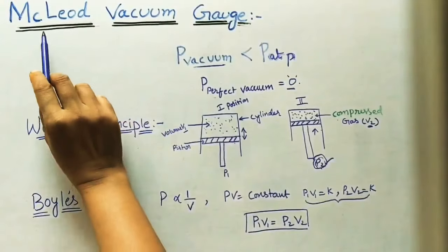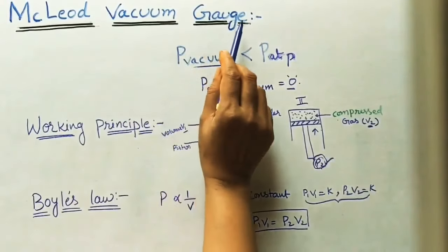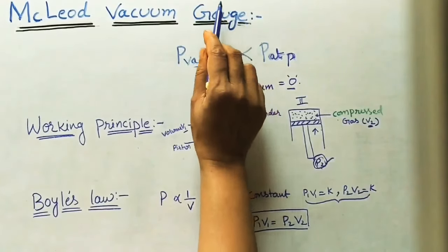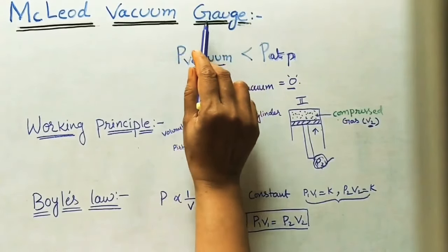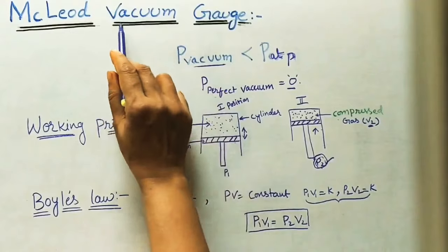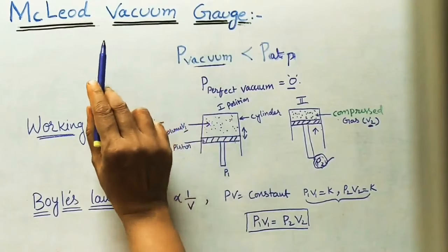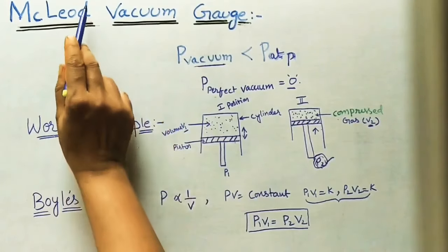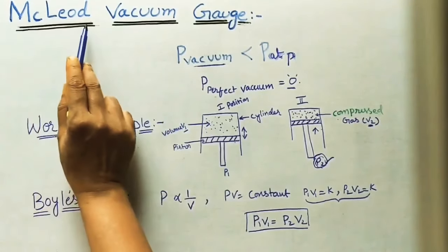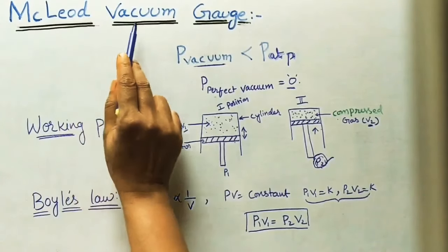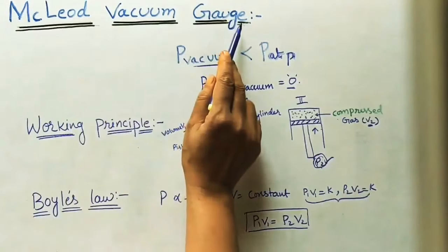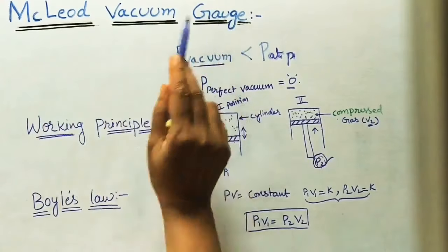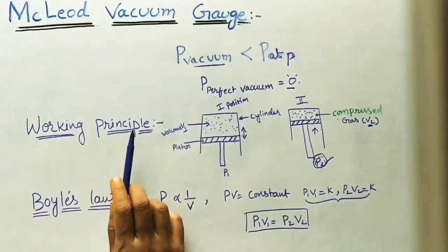Today I would like to explain about the McLeod vacuum gauge. This gauge is used for finding the vacuum pressure of a given fluid or gas. McLeod is the scientist name who invented this gauge, which is why we call it the McLeod vacuum gauge.